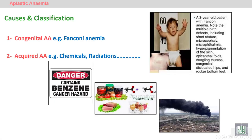What are the causes of aplastic anemia? Aplastic anemia can be congenital, such as hereditary aplastic anemia like Fanconi syndrome or Fanconi anemia, which presents with short stature, growth retardation, and multiple congenital abnormalities in the baby. It may also be acquired due to exposure to chemicals, radiations, or fumes. This classification divides aplastic anemia into congenital and acquired forms.